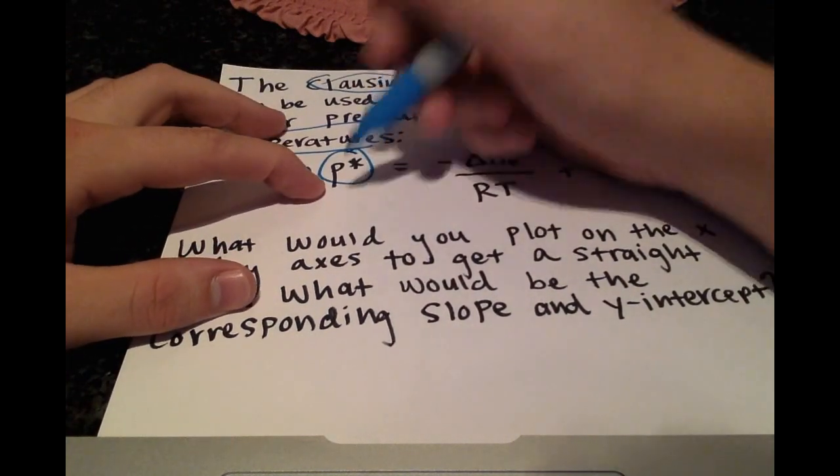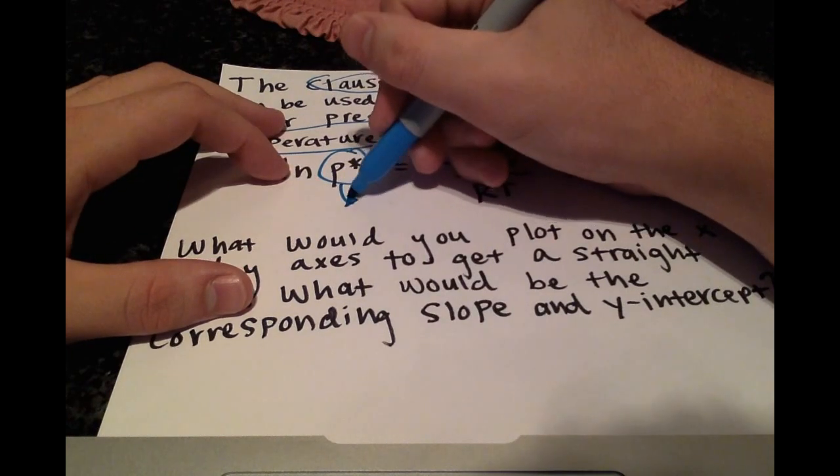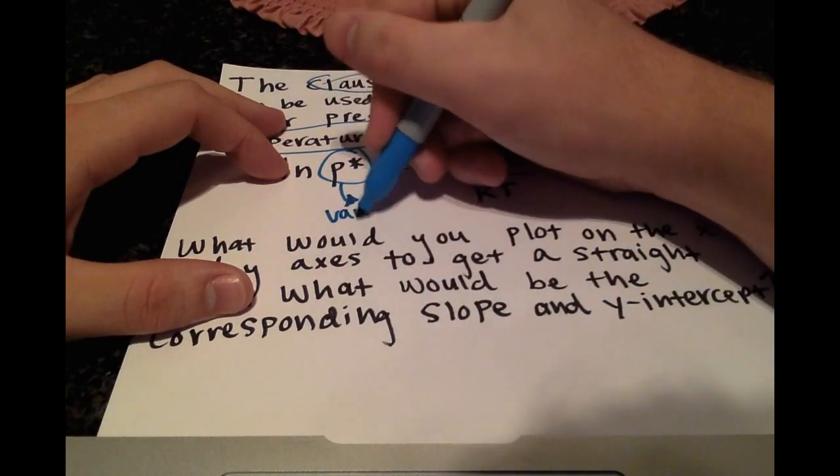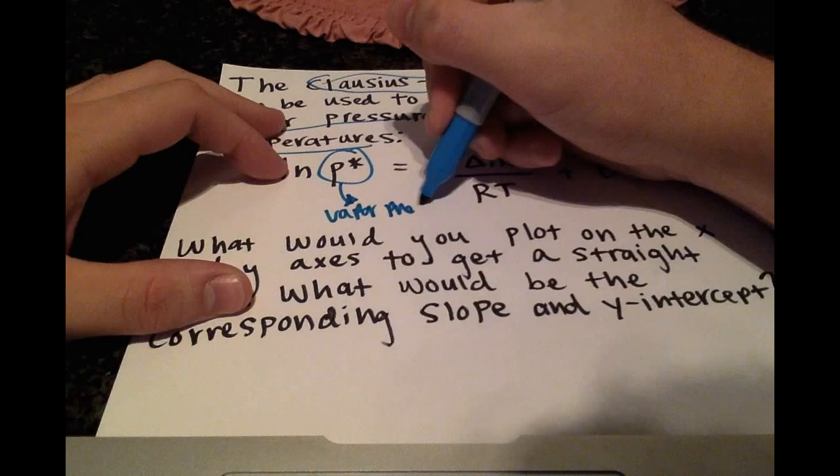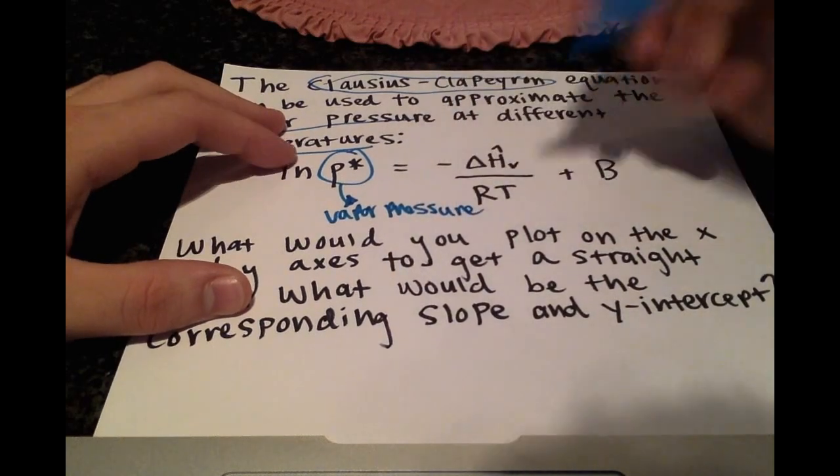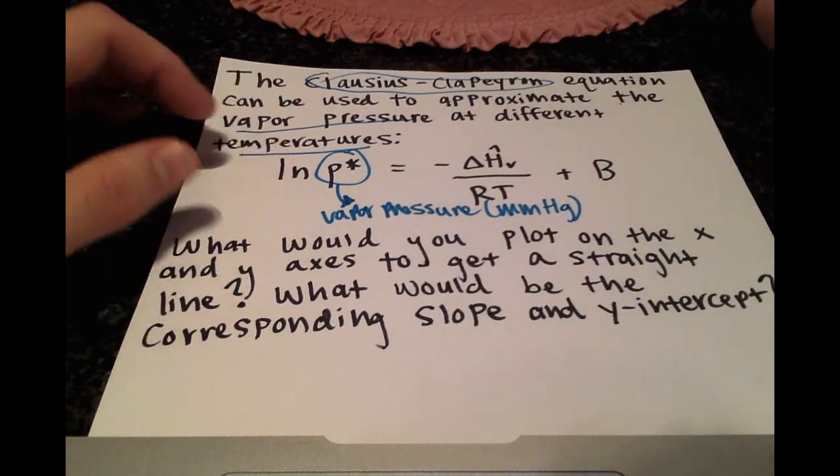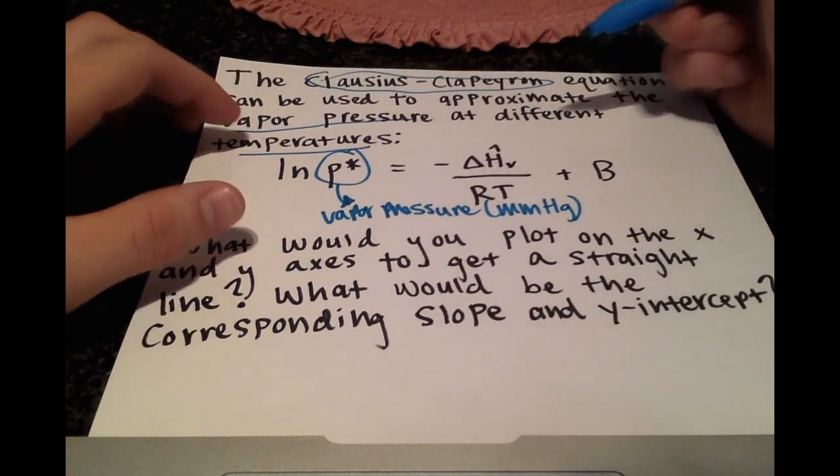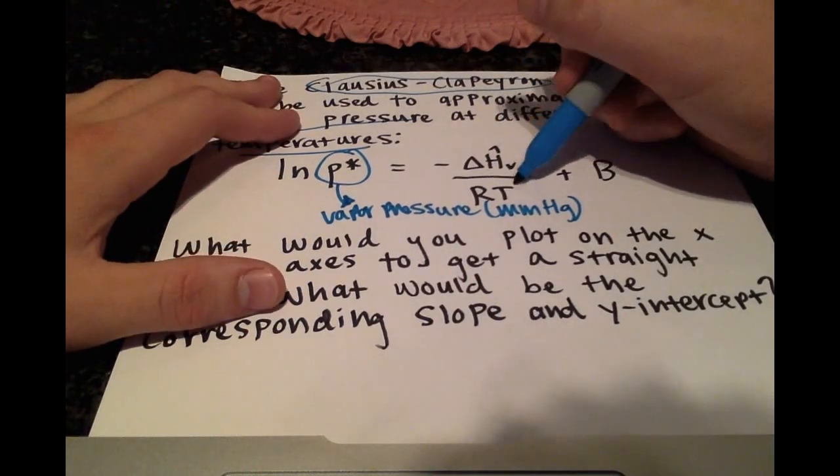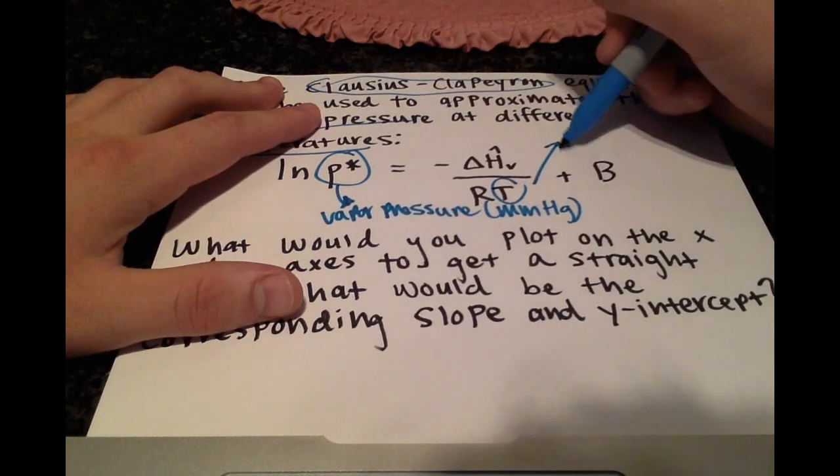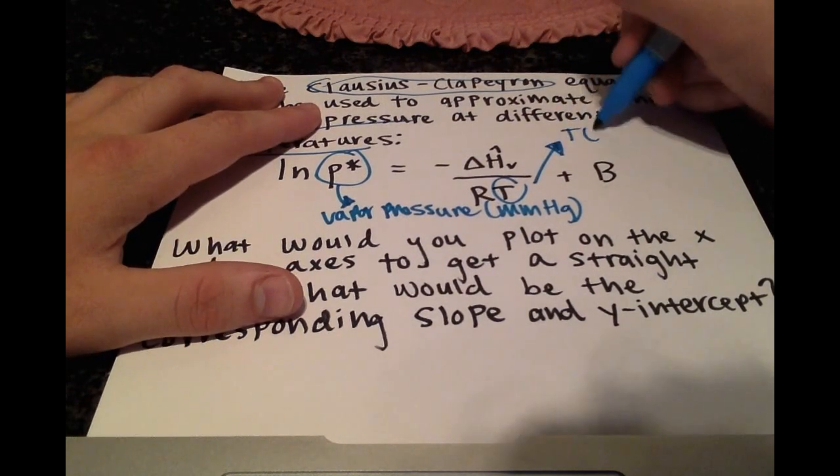So this p*, that is the vapor pressure, and the units are millimeters of mercury. And the t right here is just temperature in Kelvin.